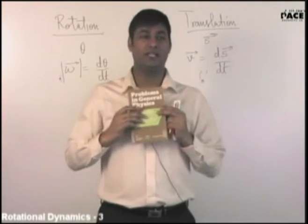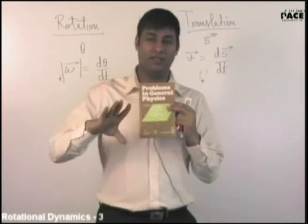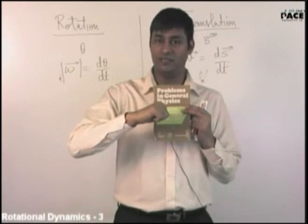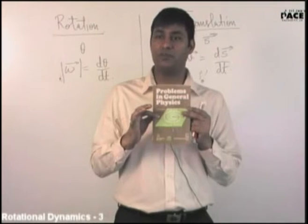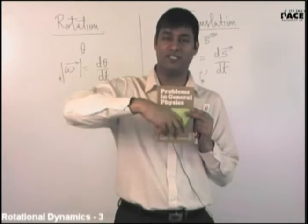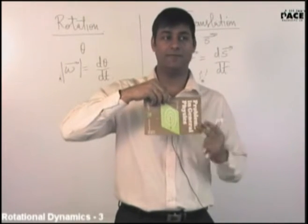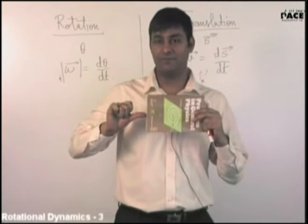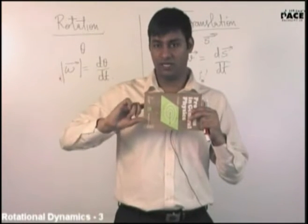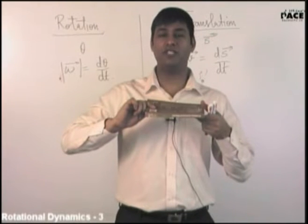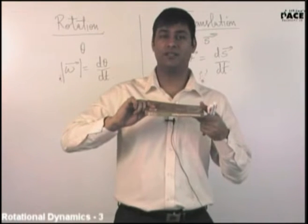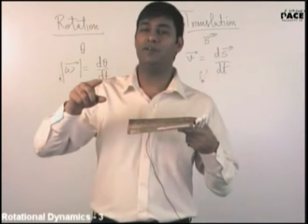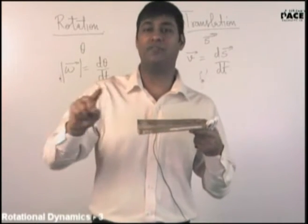Now if I do B plus A — first 90 degrees about this axis, then 90 degrees about the other axis — the book is back in original position and then rotated differently. Is the position the same in both cases? No. So A plus B is not equal to B plus A, therefore finite angles are not vectors.